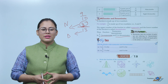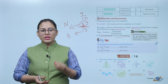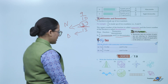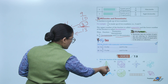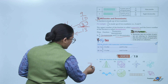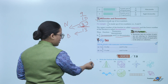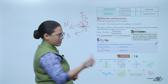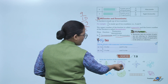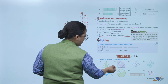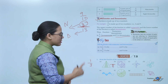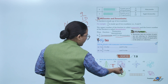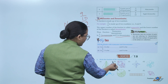Exercise: Write the fraction of the colored parts. In the first figure, there are 3 equal parts and 1 is colored — so the fraction is 1 by 3. In the next figure, there are 8 equal parts and 5 are colored — so the fraction is 5 by 8.